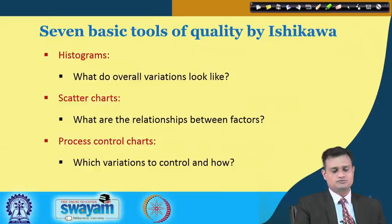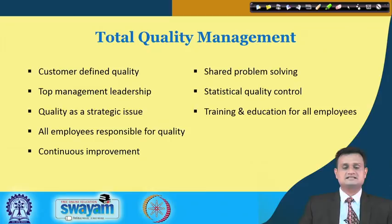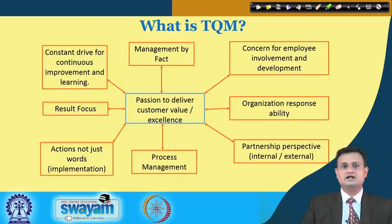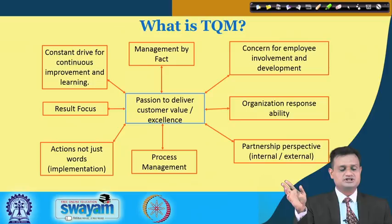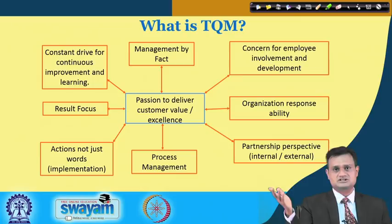Total quality management is about customer-identified quality, involvement and empowerment of people, use of SQC, shared problem solving, leadership, and team management. It is management by fact — second, process management with focus on process so results in terms of product or service will be better. Concern for employee action, not just words, and result focus. Drive out fear — these are some well-known features of TQM.